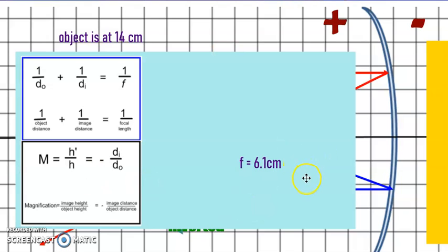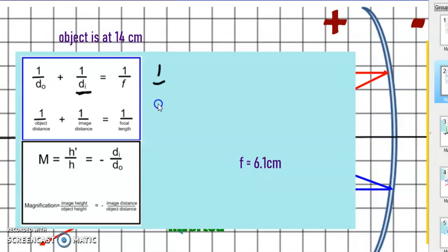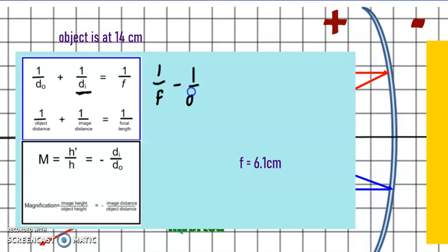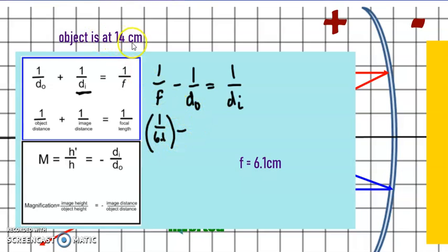We need to rearrange the formula to find the image distance. We rearrange to: 1/f minus 1/do equals 1/di. We know the focal length is 6.1, so that's 1/6.1, and I recommend putting parentheses around it in your calculator. Then subtract 1 over the distance of the object, which is 14 centimeters.